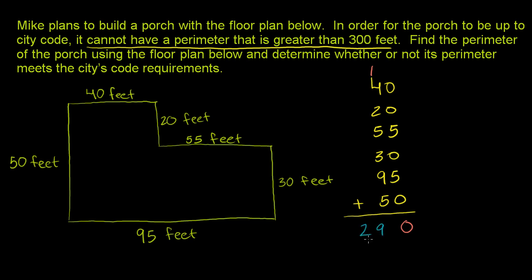So the total perimeter of Mike's porch here is 290 feet, which is less than 300 feet. So it meets the city code.